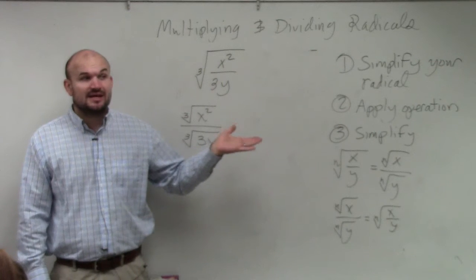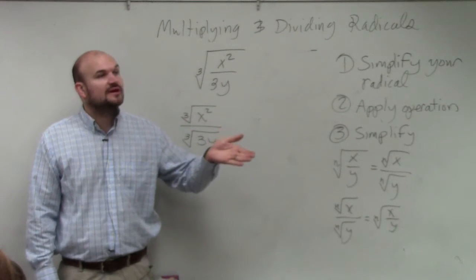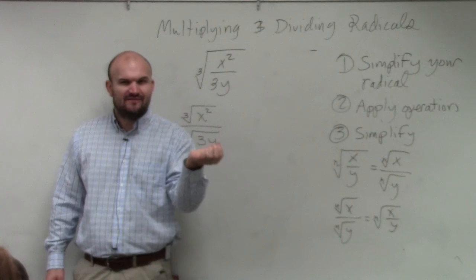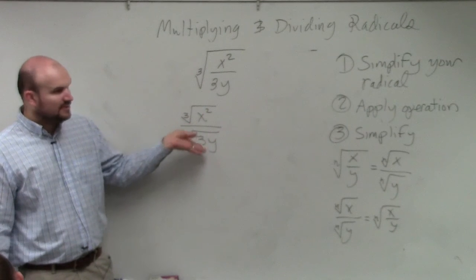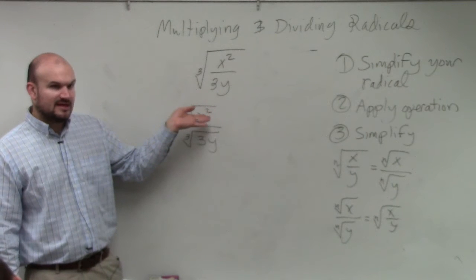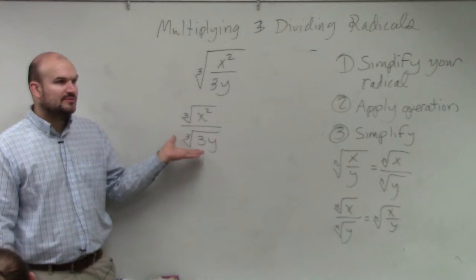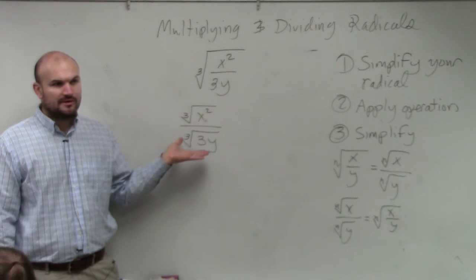And we did rationalize the denominator with complex numbers, if you guys remember. Remember when we had i in the bottom? We didn't want to have i in the bottom, right? Well, it's kind of the same thing. If you can't divide a radical into the other one, like that last example, then basically we just want to get rid of the radical in the denominator.